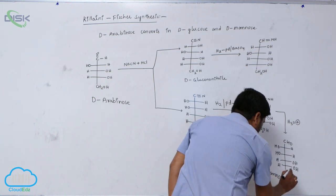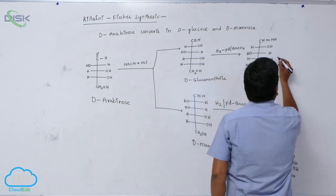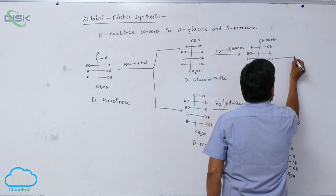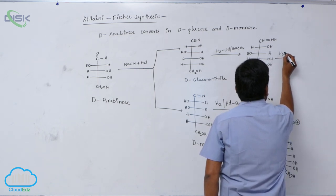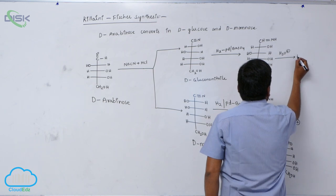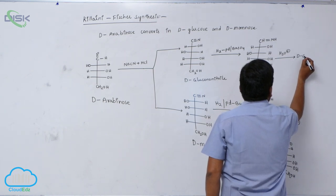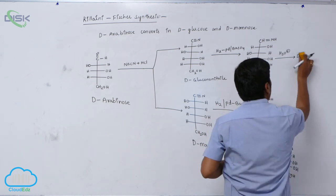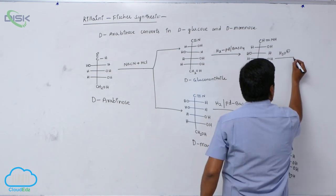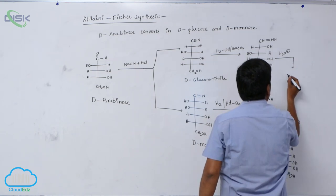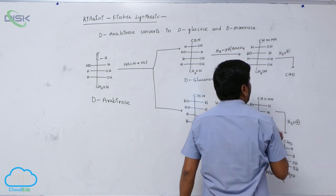D-Mannose on hydrolysis forms D-Glucose, aldehyde.